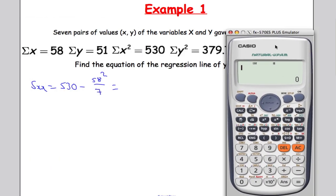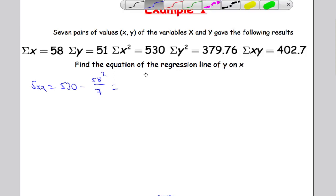And popping that into our calculator. So 530 minus 58 squared over 7 gives me 49.4286.